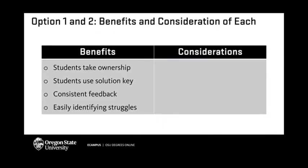Some benefits and considerations for choosing between the options: A benefit of option one is that students are forced to take ownership of their learning by finding their mistakes and understanding why they made them — it's now part of their grade. A benefit of option two is that students receive consistent feedback; Gradescope's rubric makes it easy to identify misconceptions, and you get statistics back. Considerations include the level of the course and student confidence. In lower-level courses, option one works really well because students can be intimidated by grading for correctness, and when they know they're not graded on correct answers they feel more welcomed and end up learning more.